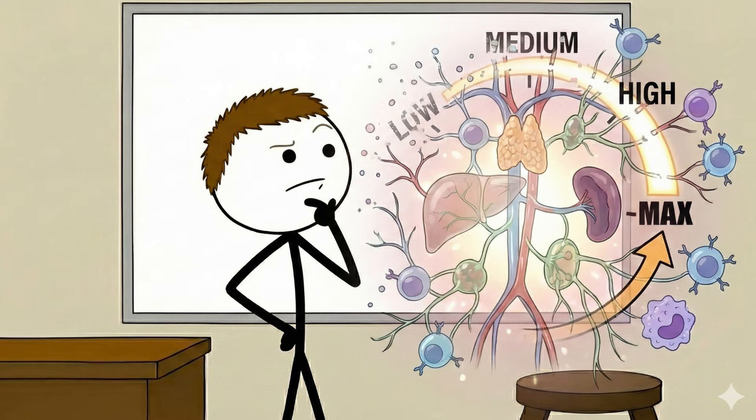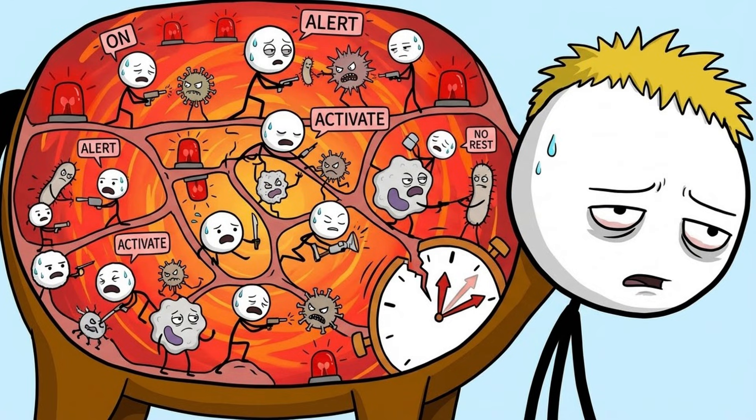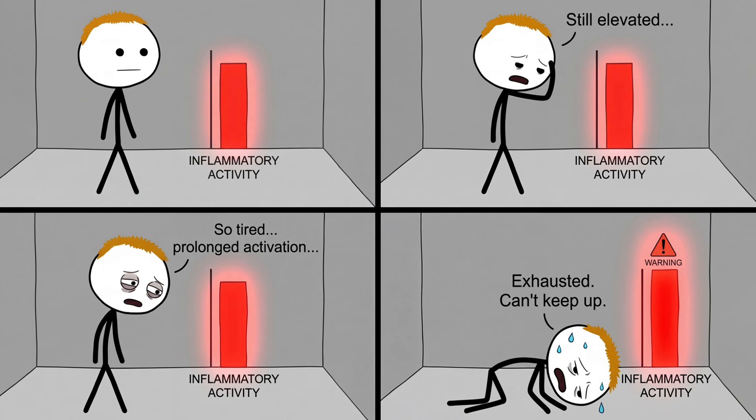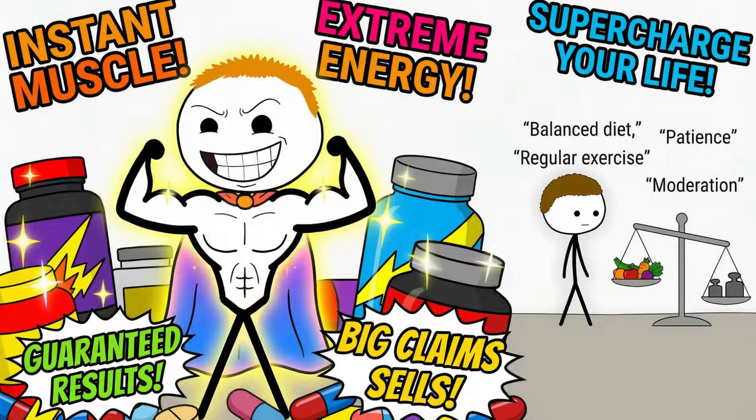Ironically, chronic immune stimulation can exhaust the system. Constant signaling keeps inflammatory pathways active, which can increase fatigue and susceptibility to illness over time. A calm, well-fed, well-rested immune system works better than an excited one. Nature doesn't hand out immunity upgrades. It enforces balance. And balance doesn't sell as well as promises.